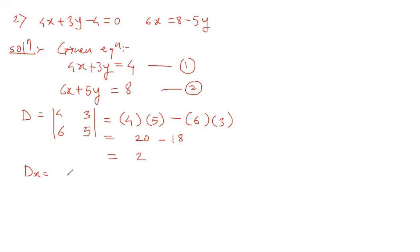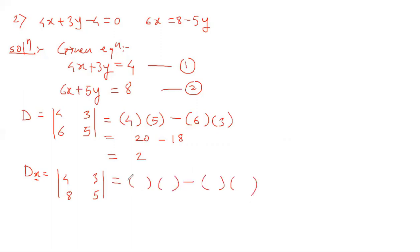Now we find Dx. Instead of x coefficients, we write the constants 4 and 8, while y coefficients 3 and 5 remain as they are. Cross multiplying: 4 times 5 is 20, and 8 times 3 is 24. So 20 minus 24 equals minus 4. That is the value of Dx.